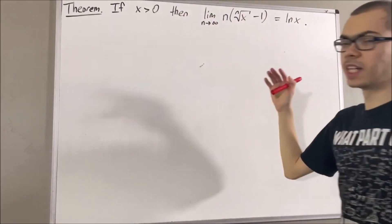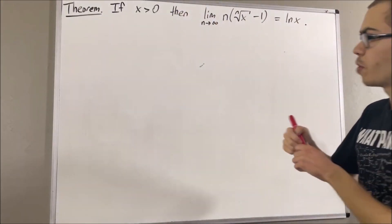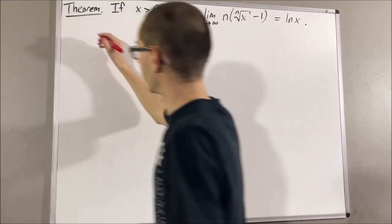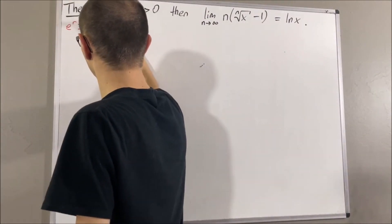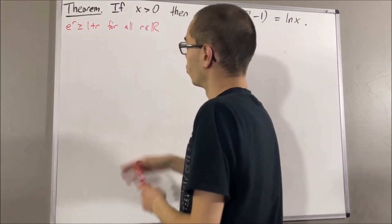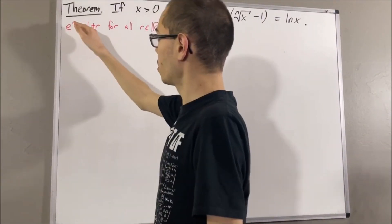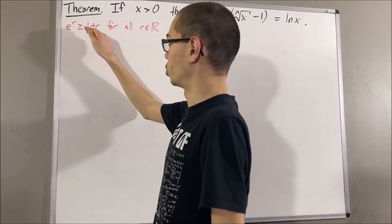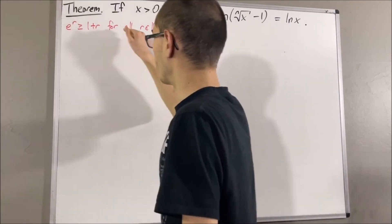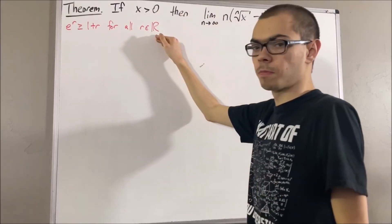A property of the exponential function that we know about is the following: e to the r is greater than or equal to 1 plus r, for all real numbers r.